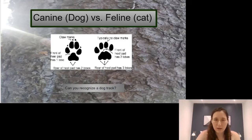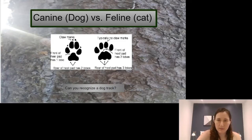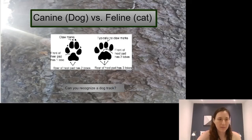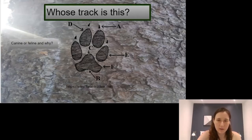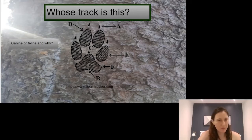Another thing is you can almost make an X in between the dog tracks. And the cat family — it's all wobbly with three little blobs at the back, and it's kind of rounded. So whose track do you think this is — dog family or cat family? It's a dog family.